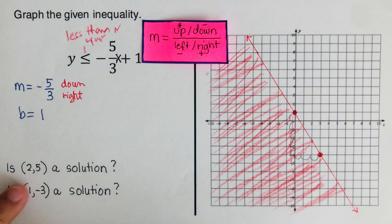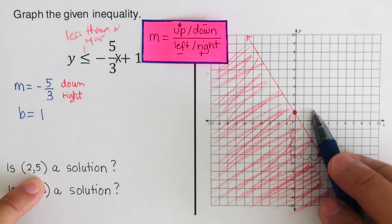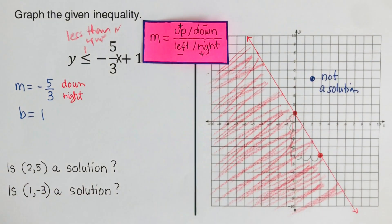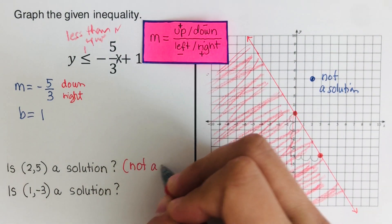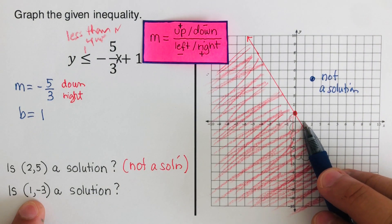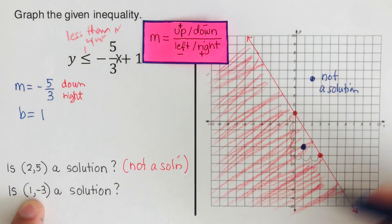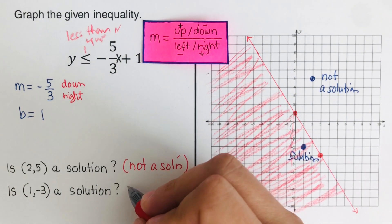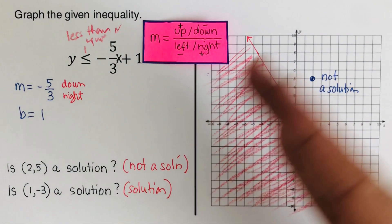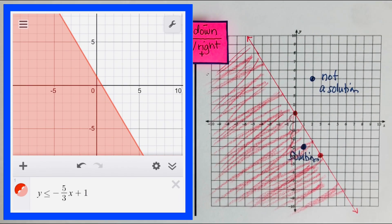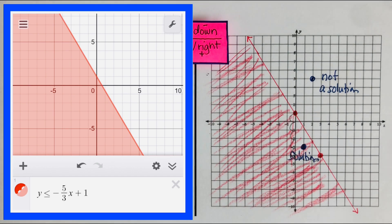Let's check two points. The point (2, 5) is not in the shaded portion, so it is not a solution. The point (1, -3) is in the shaded area, so it is a solution. The paper graph matches the Desmos version, which shades the solution region in red.